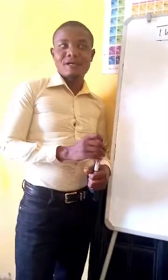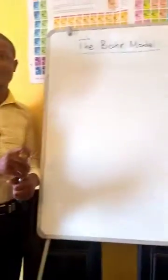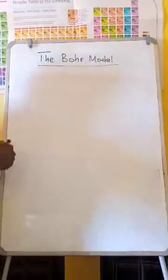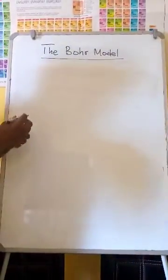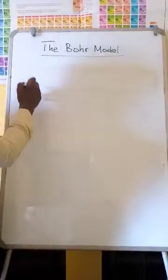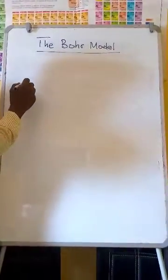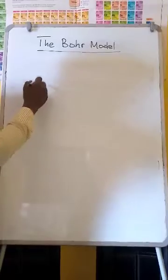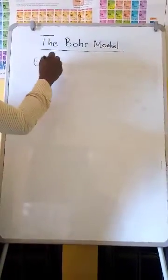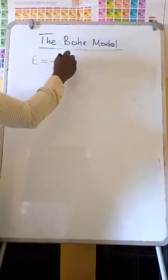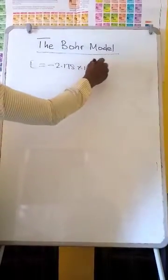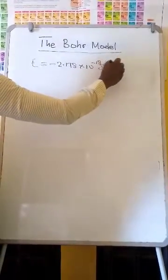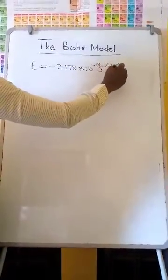Hi, today we look at the Bohr model. The most important equation to come from Bohr's model is the expression of energy levels available in the electron of a hydrogen atom: E is equal to negative 2.178 times 10 to the minus 18 joules, times Z squared over n squared.